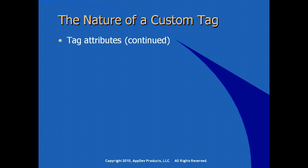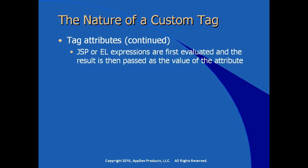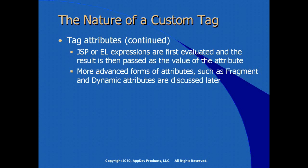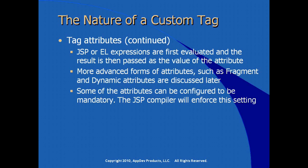Some more things to keep in mind about the nature of a custom tag: JSP or EL expressions are first evaluated and then the result is passed as the value of the attribute. More advanced forms of attributes such as fragment and dynamic attributes we'll discuss a little later. Some attributes can be configured to be mandatory, and then the JSP compiler will enforce this setting, giving the developer a hint into the workings of the described tags.